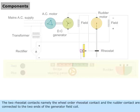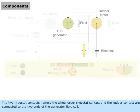The two rheostat contacts, namely the wheel order rheostat contact and the rudder contact, are connected to the two ends of the generator field coil.